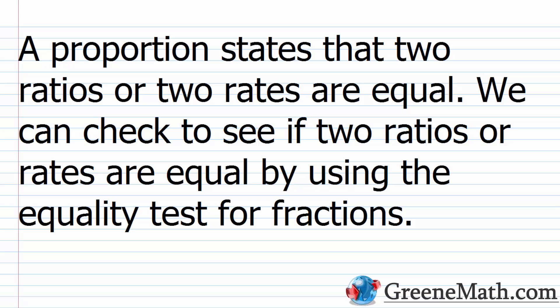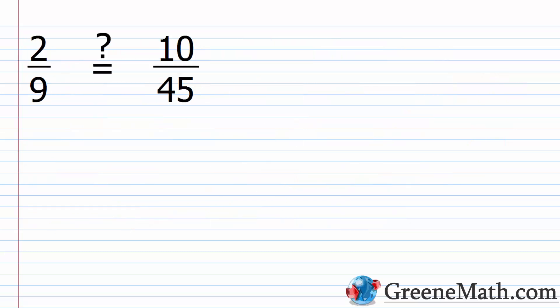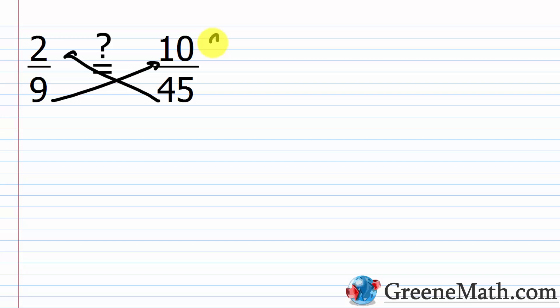Let's wrap up the lesson by talking about proportions. A proportion states that two ratios or two rates are equal. We can check if two ratios are equal by using the equality test for fractions — two fractions are equal if their cross products are equal. For example, is 2 over 9 equal to 10 over 45? Cross multiply: 9 times 10 is 90, and 45 times 2 is also 90. The cross products are equal, so yes, this is a proportion.